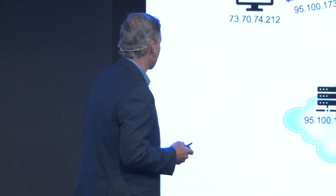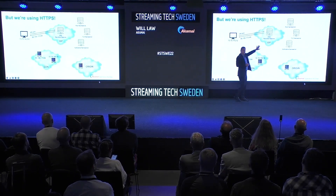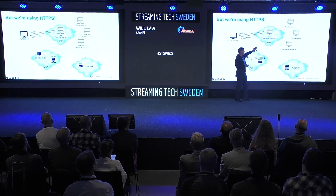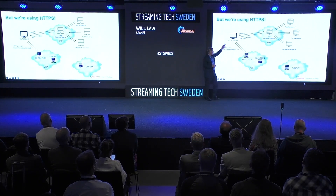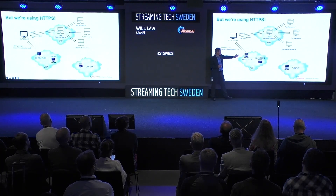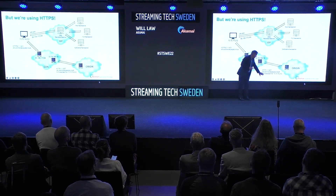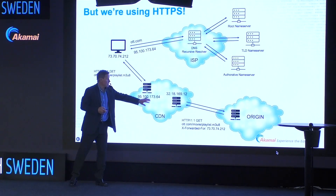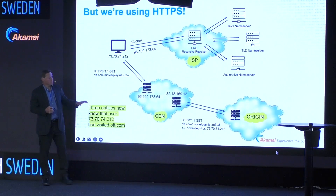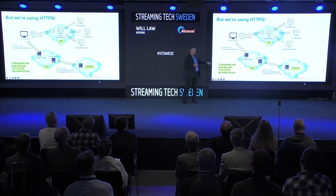So let's examine a typical session. I'm a client. I make a request to ott.com. The first thing I have to do is make a request to a DNS resolver that's probably run by the ISP. It might talk to a number of other name servers, but it's going to come back with an answer. That client is then going to make a request to the edge server at the CDN. The CDN will relay that down and make a request to the origin, and it relays through various headers the actual client IP address. So the CDN, the origin, and in fact the ISP — everything colored in yellow — now know that this client IP visited ott.com.